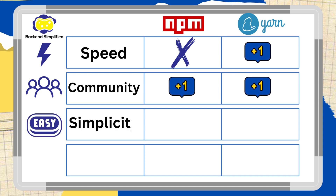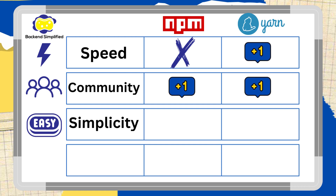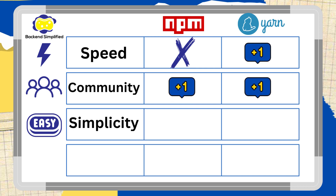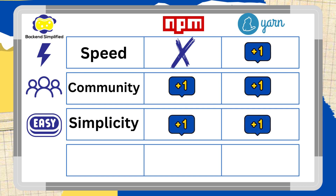The next category is simplicity. Both NPM and Yarn are straightforward and highly intuitive to use. Additionally, they provide good documentation. Therefore, let's award one point to each of them for their simplicity.